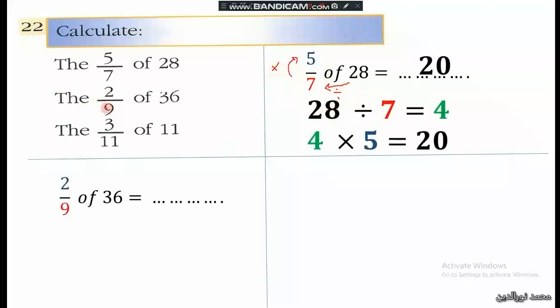Then we have 2/9 of 36. We divide by the denominator and the answer is multiplied by 2. 36 divided by 9 is 4, then 4 times 2 is 8.